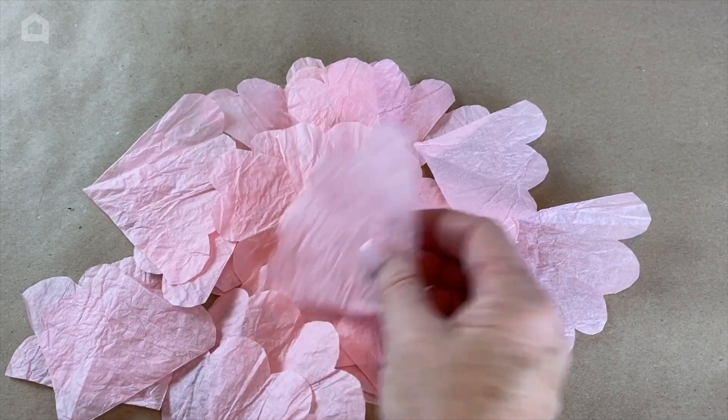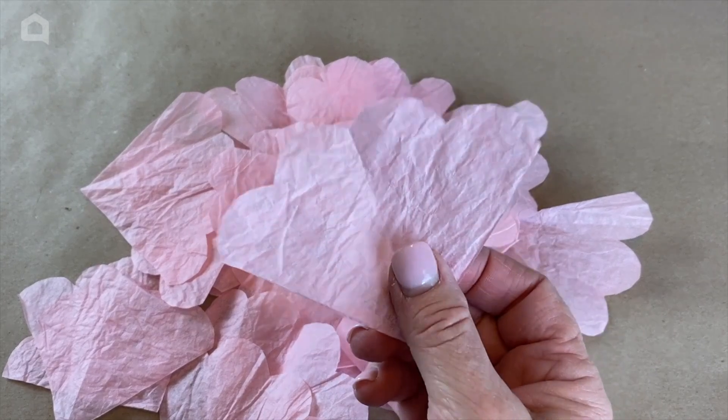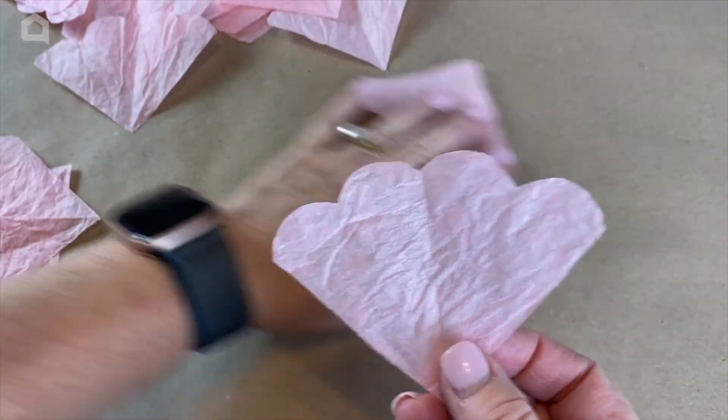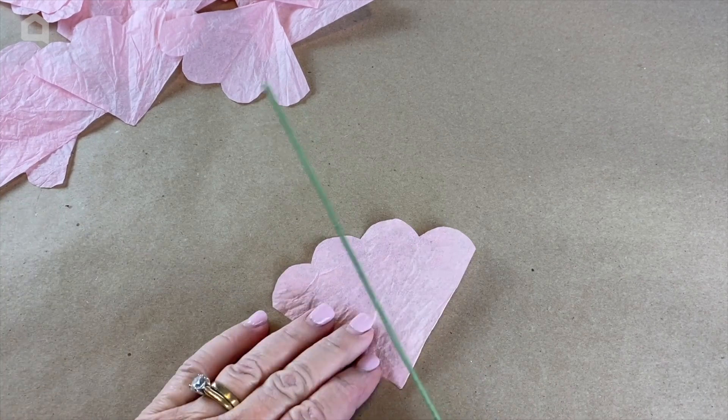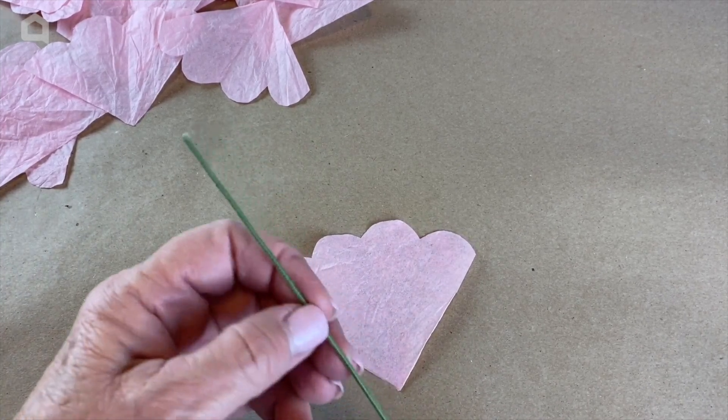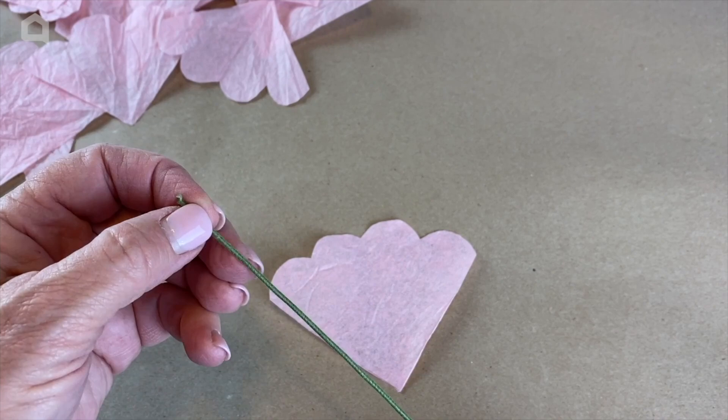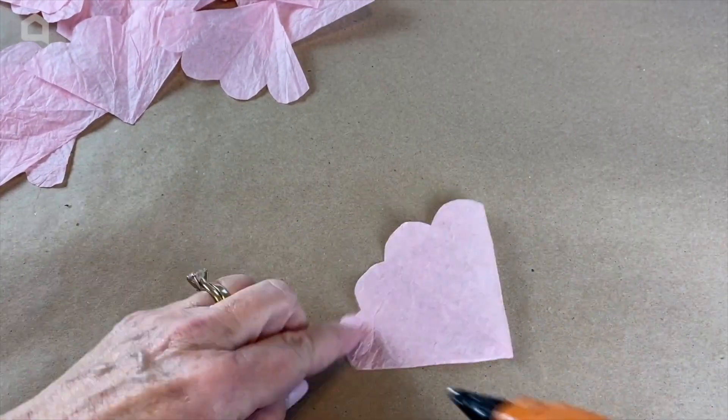When you're all finished folding and cutting, you're going to have 24 pieces that look just like this. The next thing you're going to do is you're going to take a piece of a paper-wrapped or cloth-wrapped floral wire. You don't want just the plain.